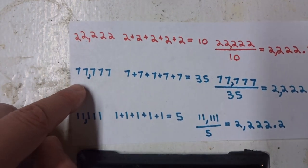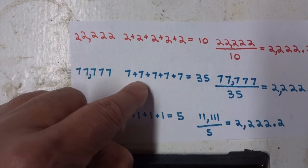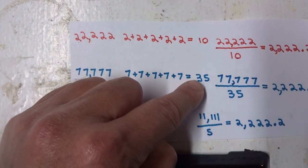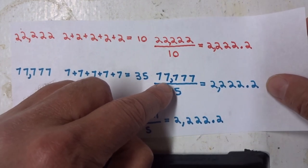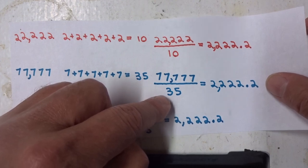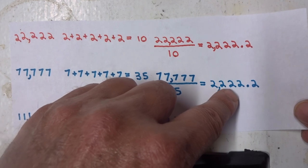If you take 77,777, add the sevens together, we get 35. 77,777 divided by 35, once again, equals 2,222.2.